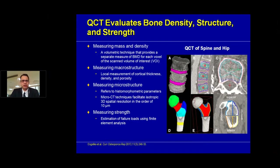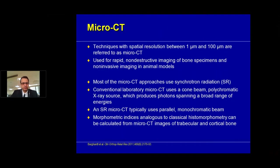Quantitative CT looks at the density, structure and strength of the bone, helping measure bone mass, density and microstructure, and is one of the best ways of determining bone strength. Micro CT looks at microscopic structure in small areas with resolution as small as 1 to 100 micrometers — it is a rapid non-destructive imaging technique for determining microscopic density of specimens non-invasively. As of now it is mostly used for research purposes and is beyond the scope of routine clinical use.